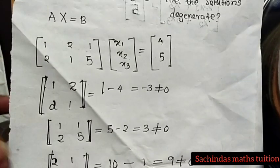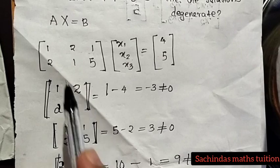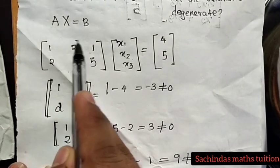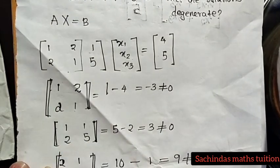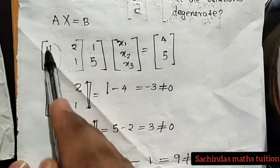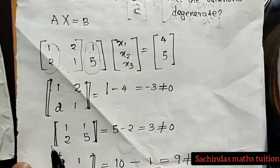We have a 3 matrix and submatrix. We form a 2 by 2 submatrix from the original matrix.